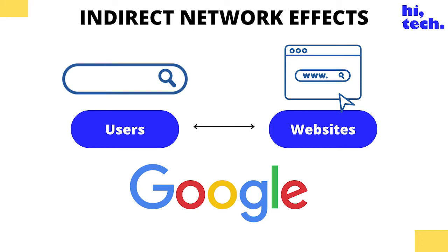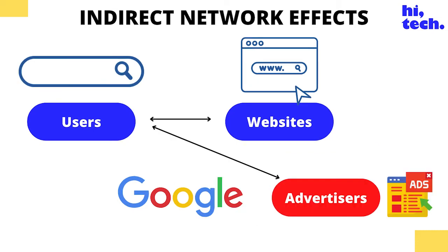In Google's case, they offered up free, pretty effective search to users and even — if you can remember those days — free listings for businesses. Then it introduced a third customer type: the advertisers, who were all too happy to pay to connect with customers. The customers were happy because they were still getting free, pretty effective search.